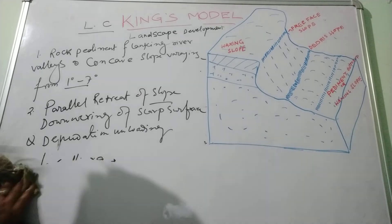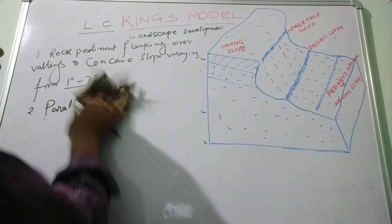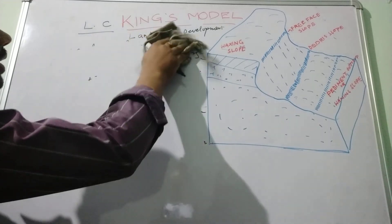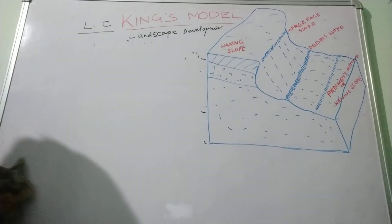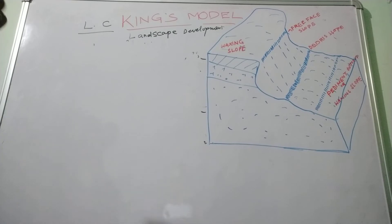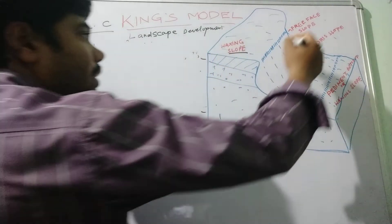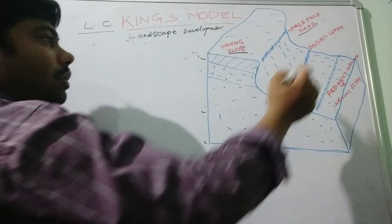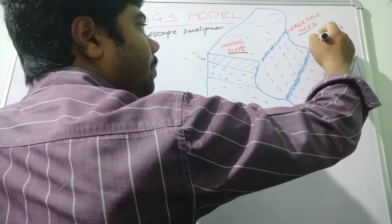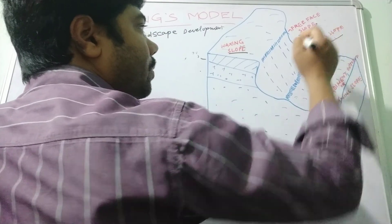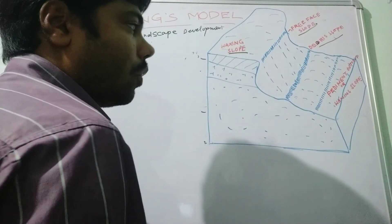King divided the slope in landscape development into four important components: the first is the Cuesta, known as the waxing slope; the second is the free face slope; the third is the debris slope; and the fourth is the pediment slope, also called the waning slope.